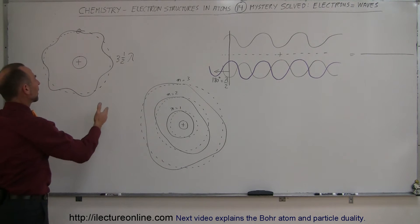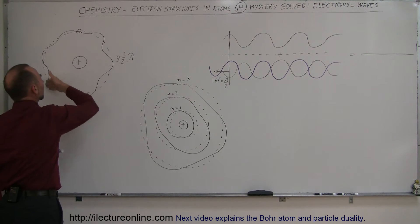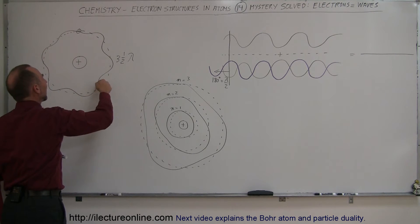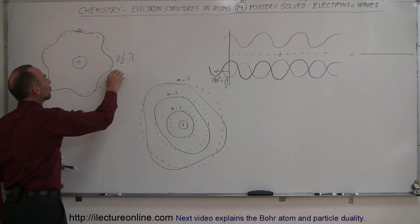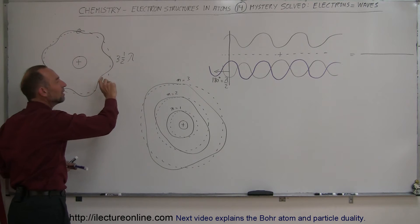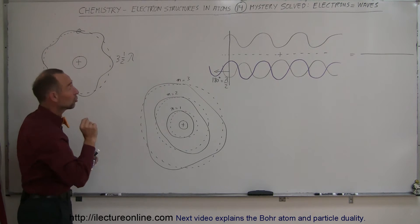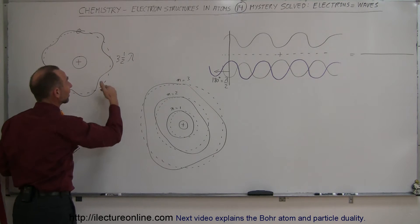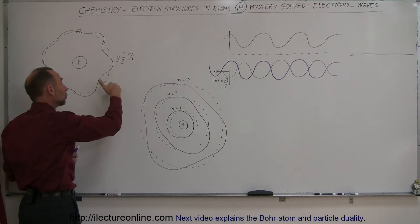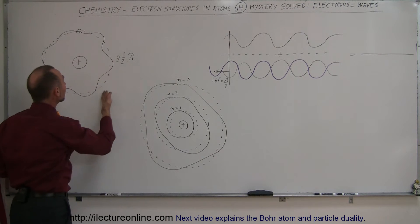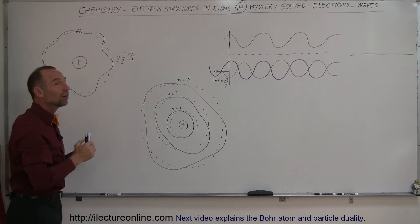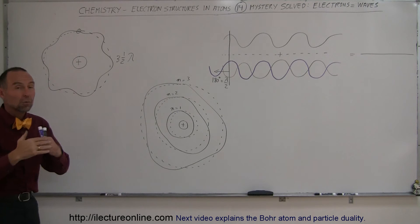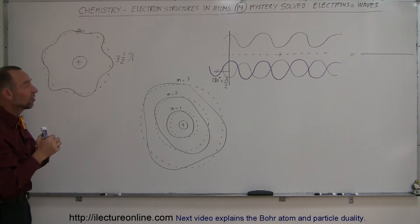That's what happens to an electron: if an electron goes around the nucleus and the path it takes is not equal to an integer number of wavelengths — like three and a half, or two and a quarter — then when it comes around there will be destructive interference, and the electron will cease to exist.